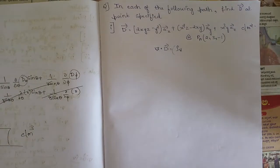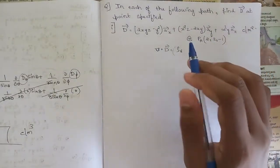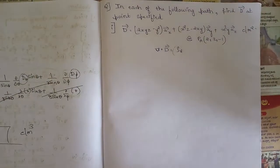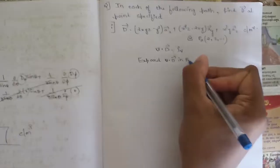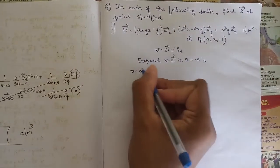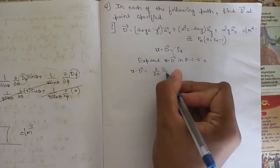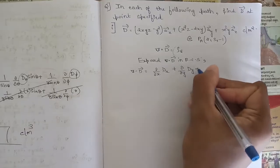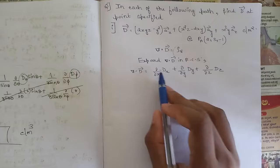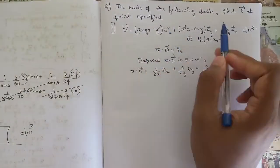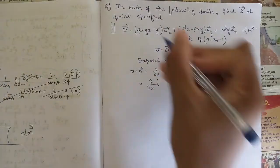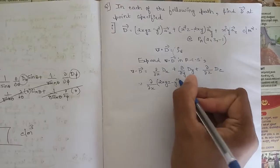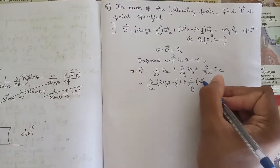First we need to see in which coordinate system the problem is given. Since we have unit vectors a_x, a_y, and a_z with x, y, z components, we know it is in the rectangular coordinate system. We need to expand del dot D in the rectangular coordinate system. The equation for del dot D in RCS is: (∂/∂x) of Dx + (∂/∂y) of Dy + (∂/∂z) of Dz, where Dx, Dy, Dz are the coefficients of vectors a_x, a_y, a_z. Substituting: (∂/∂x) of (2xyz − y²) + (∂/∂y) of (x²z − 2xy)...